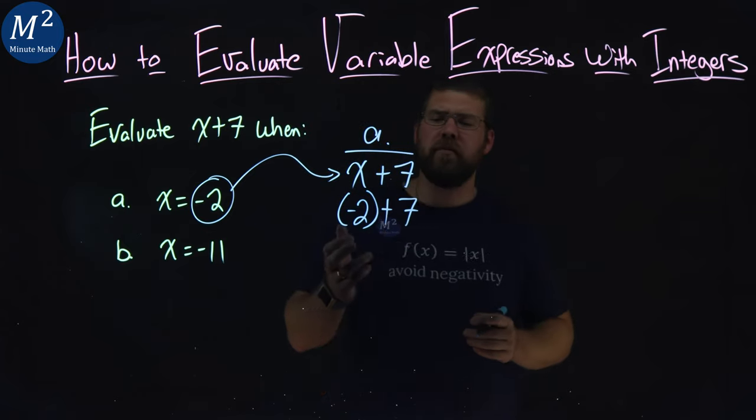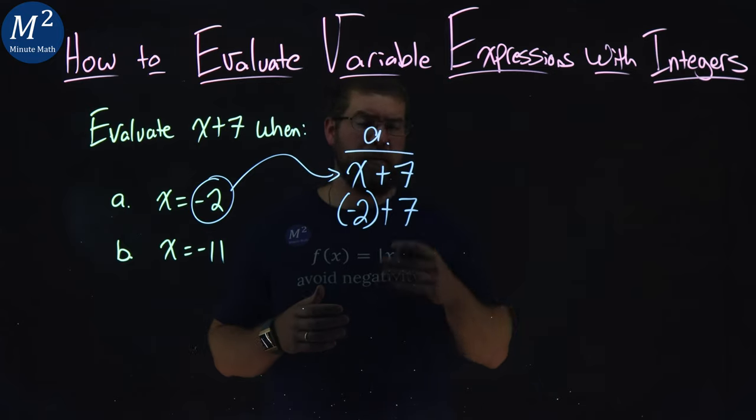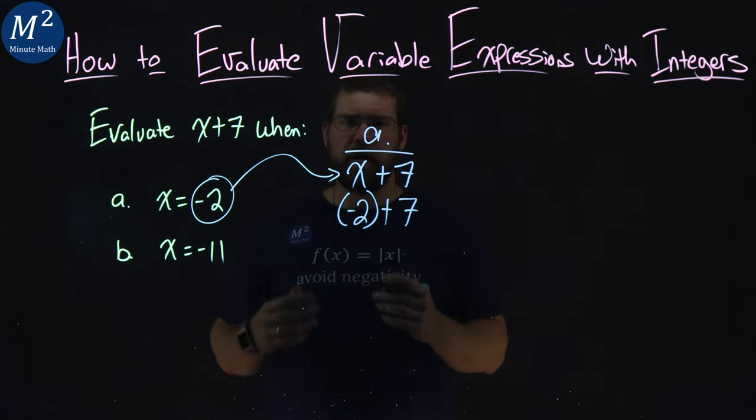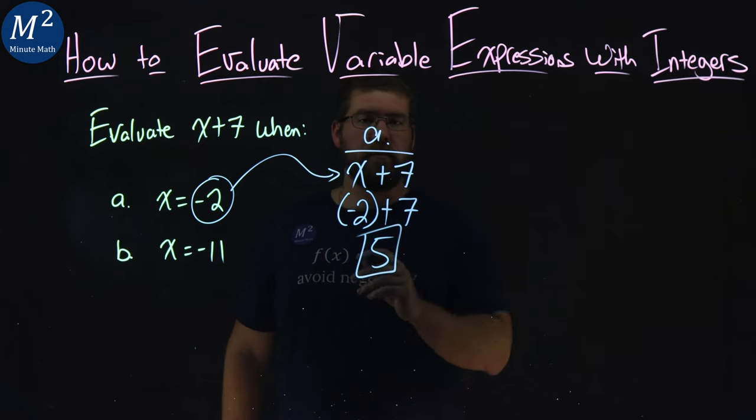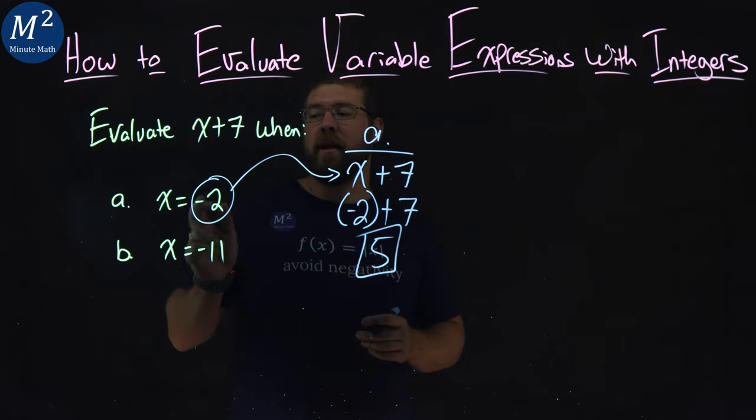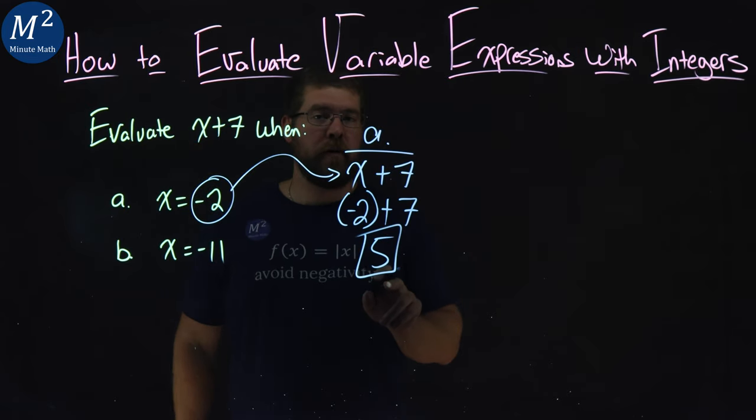Now, negative 2 plus 7 is the same thing as 7 minus 2, which is just 5. And so our first part is done. Part A, evaluate x plus 7 when x equals negative 2, we've got 5.